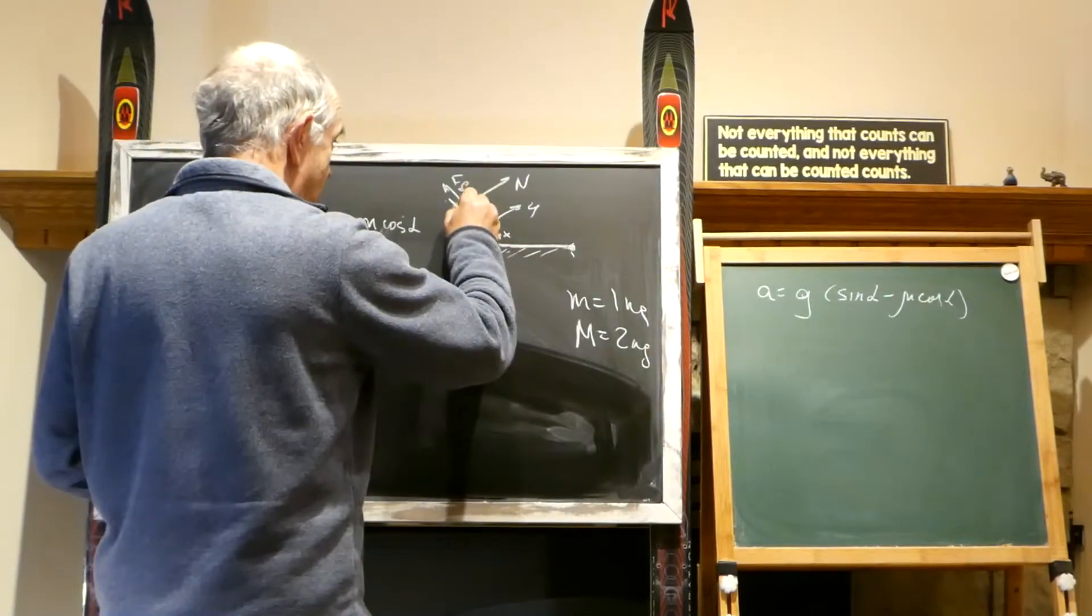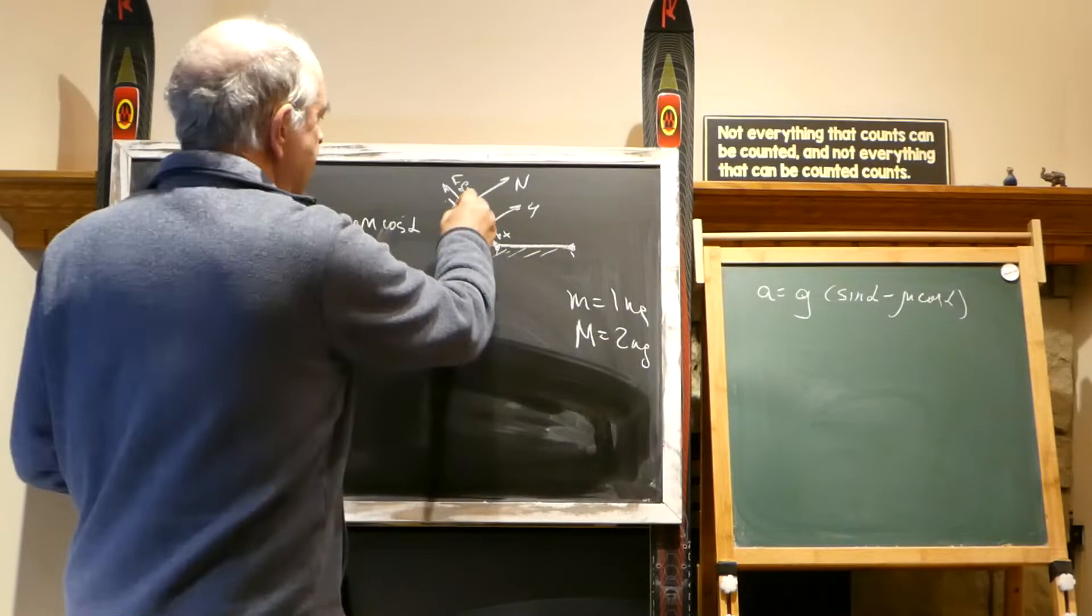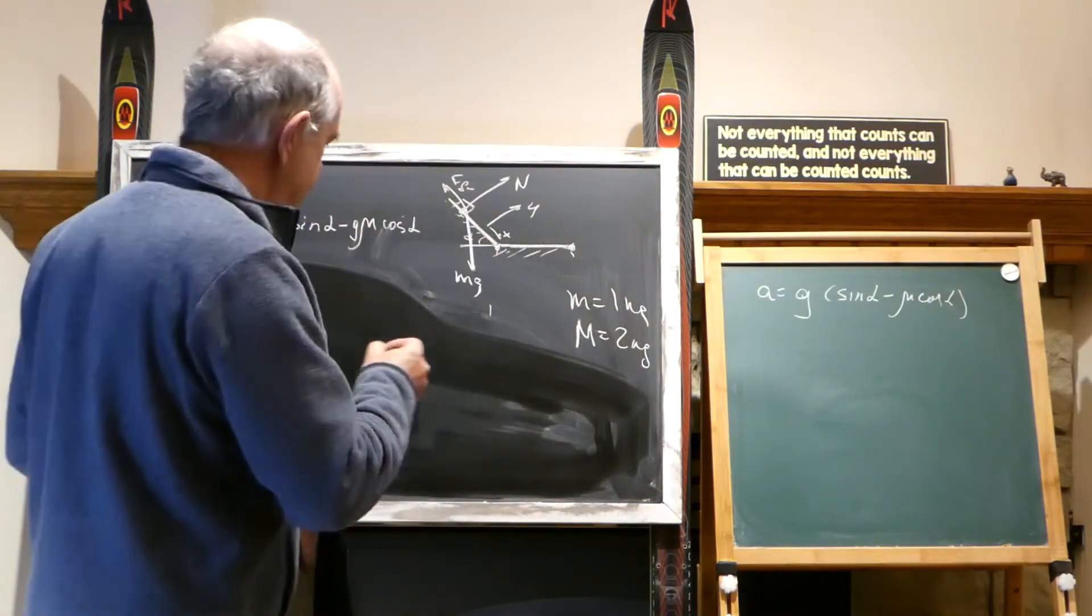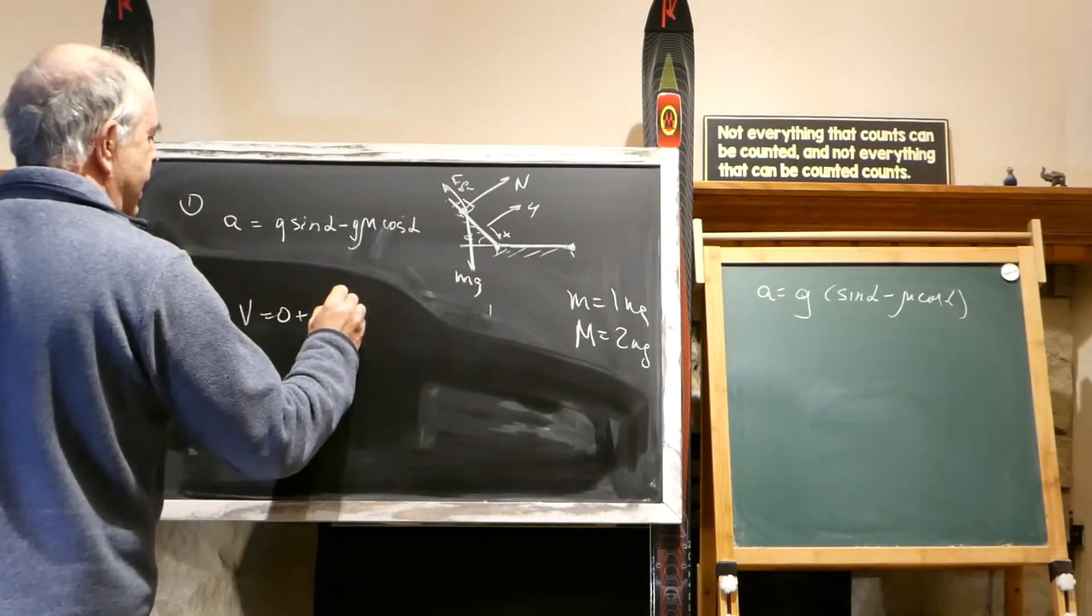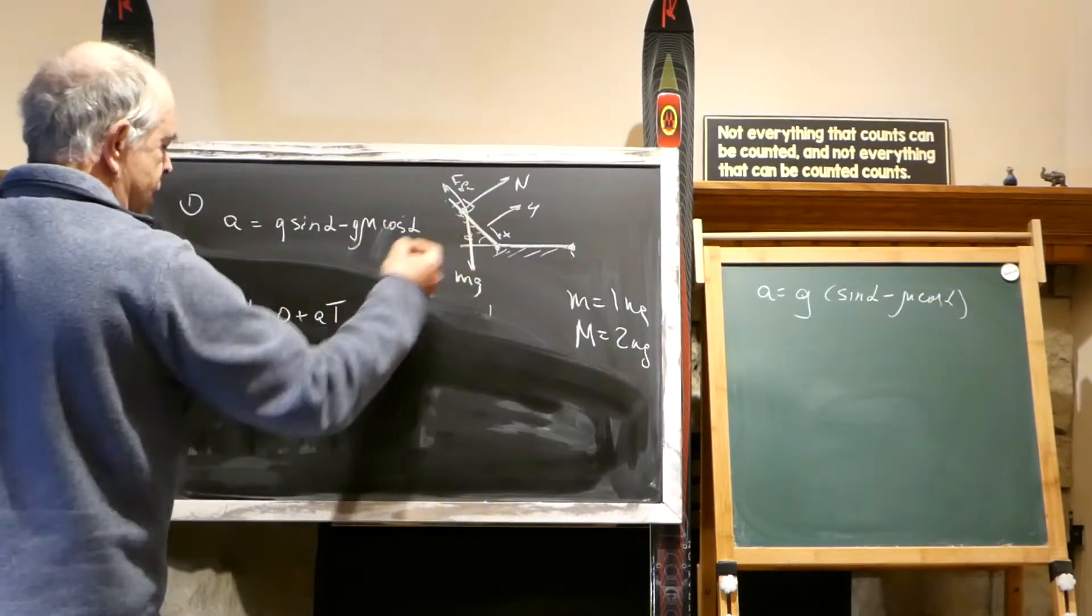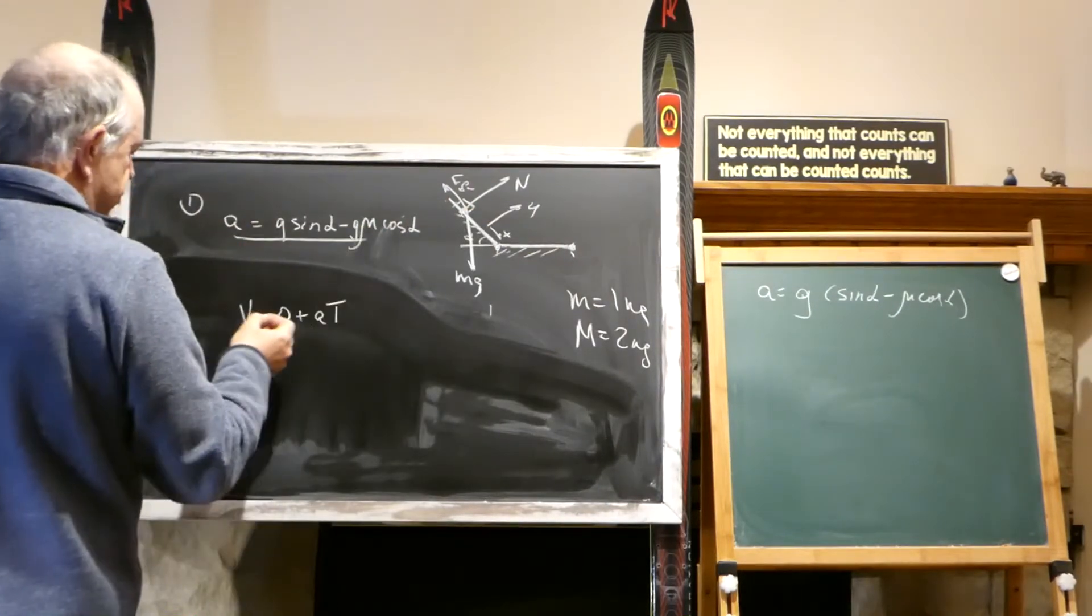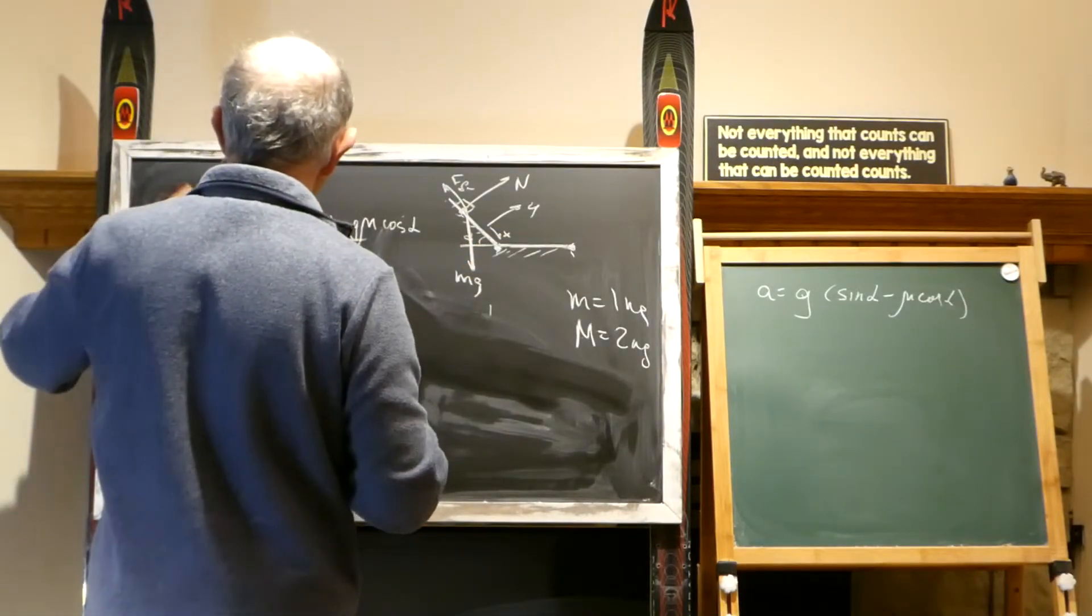starting from the same point with the same initial speed zero, it takes them the same time to come from here to here. The same time, the same distance, the same final speed would be the same, because final speed would be initial plus AT, where T is the time for travel and A is this value. So the speed at this point would be the same for both bodies regardless.